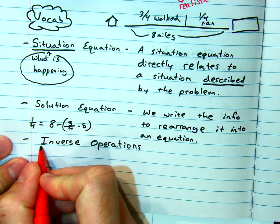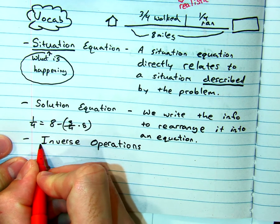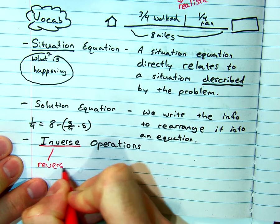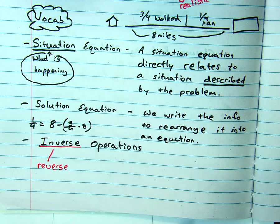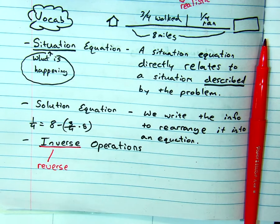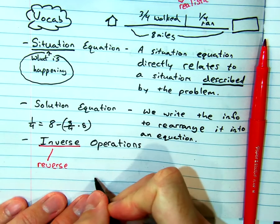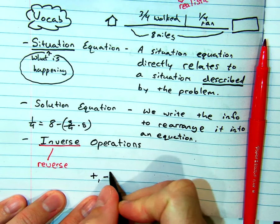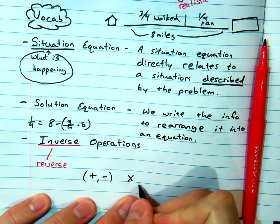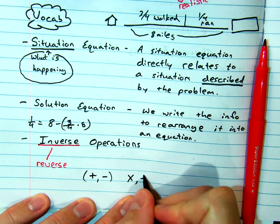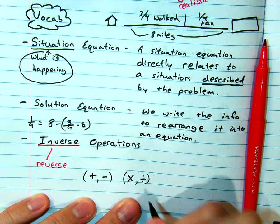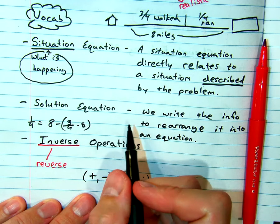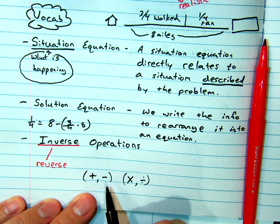And last but not least, this term is going to be real important. Inverse operations. Can you say it with me? Inverse. And it should sound a lot like reverse. So we want to talk about operations that undo one another. Addition's inverse operation is subtraction. Multiplication's inverse operation is division. So these are inverted pairs. When we're talking about rewriting a solution equation, we might want to use an inverse operation.